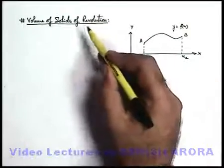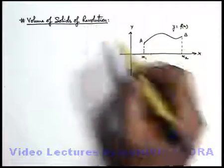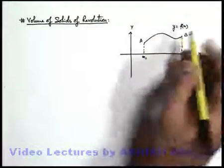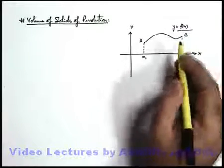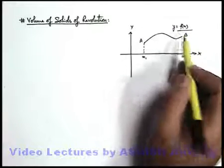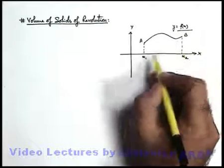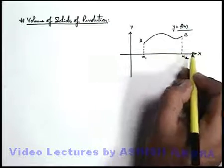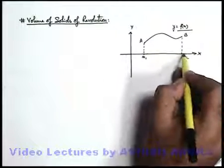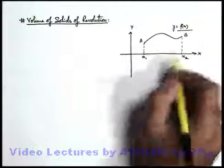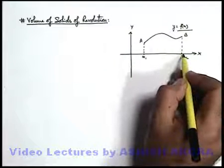To understand what we mean by solids of revolution, let's consider a curve of a function given as y equals f of x. We have drawn the curve from the limits of its x coordinate from x1 to x2. This would be the shape between x1 and x2, these two limits.